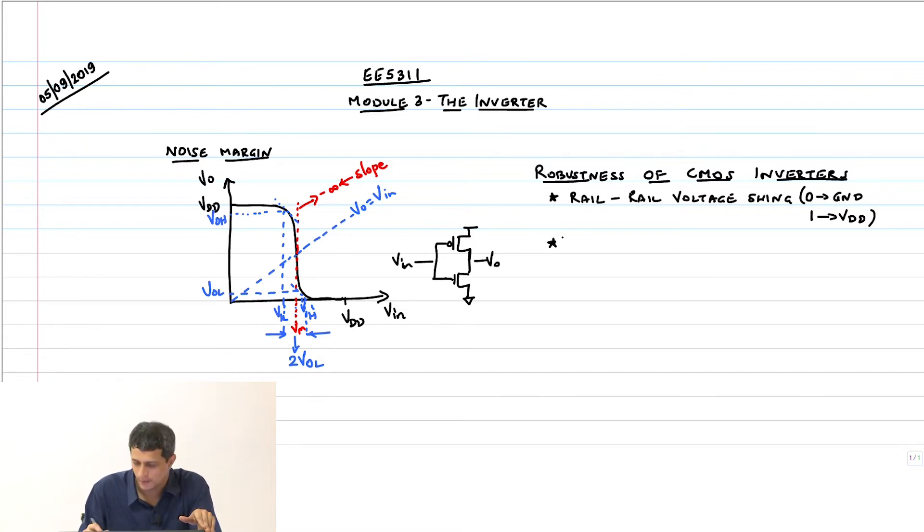Second important point: it is ratio-less, which means it does not depend on what my values of Wp and Wn are. Whatever the values, the voltage swing is rail to rail. It is independent of Wp by Wn. You will see why it is called ratio-less because later we will do ratio logic where it will depend explicitly on this Wp and Wn value.